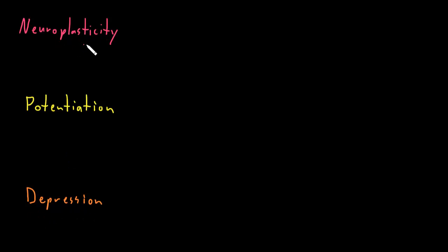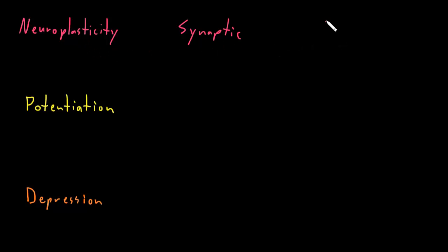Neuroplasticity can happen at the synapse, which we can call synaptic neuroplasticity. Or neuroplasticity can occur at the level of entire cells, where the total number of synapses between a neuron and its target cell are changed — this we could call structural neuroplasticity.